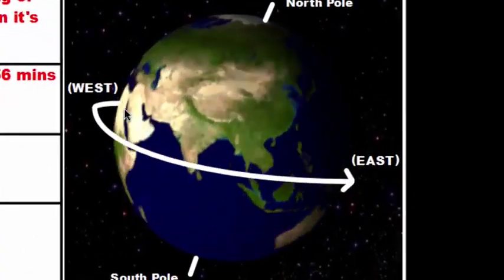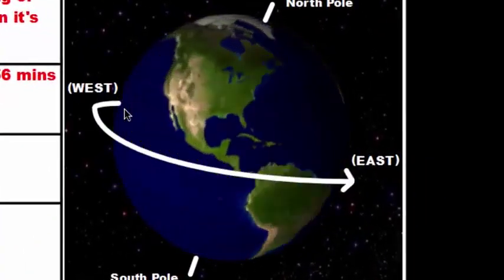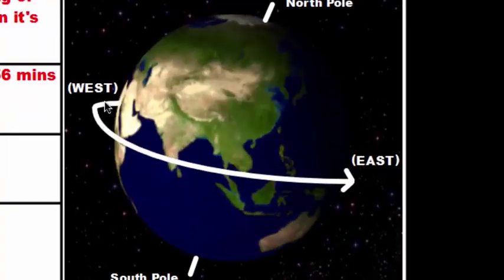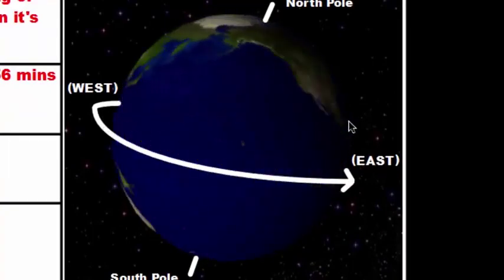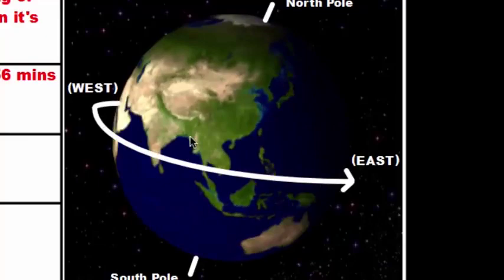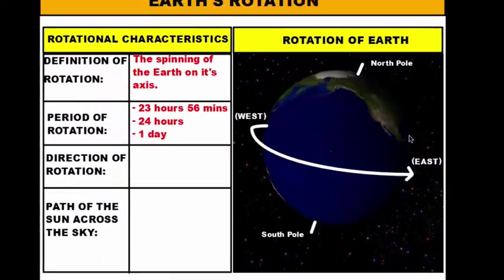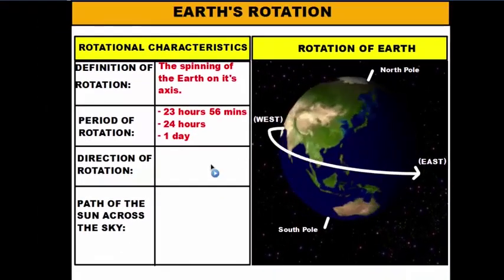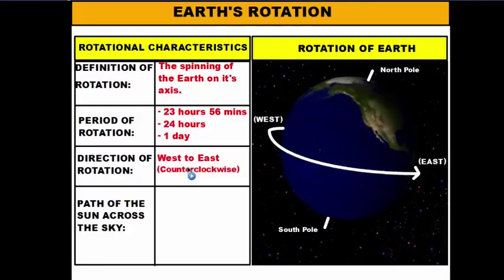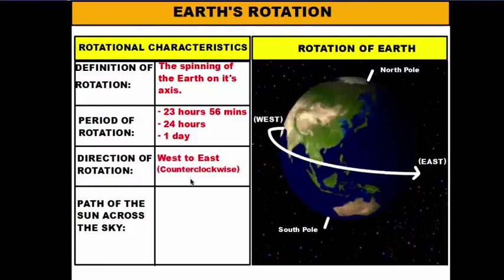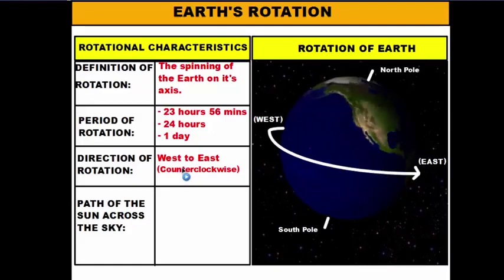If you look at this animation, you'll notice that the earth spins in a particular direction. You'll notice the land masses start from the west and go east — so the direction of rotation is from west to east.